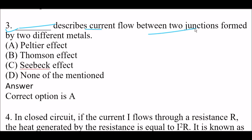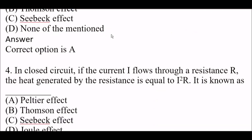Next question: blank space describes current flow between two junctions formed by two different metals. Option A: Peltier effect. Option B: Thompson effect. Option C: Seebeck effect. Option D: none of the mentioned. Right answer is Option A — Peltier effect describes current flow between two junctions formed by two different metals.